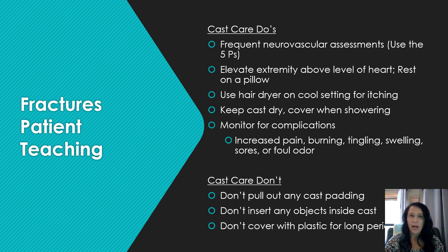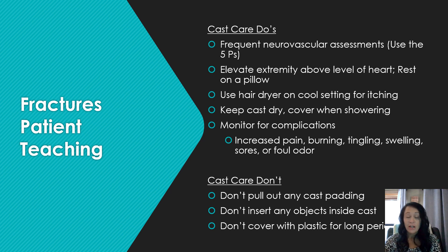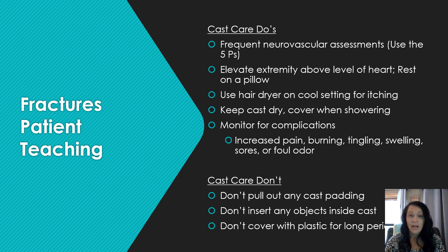Cast care dos: do frequent neurovascular assessments using the five P's; elevate the extremity above the level of the heart resting on a pillow; use a hairdryer on cool setting for any itching; keep the cast dry and cover it when showering; monitor for complications such as increased pain, burning, tingling, swelling, sores, or foul odor. Cast care don'ts: don't pull out any cast padding, don't insert objects inside the cast, don't cover with plastic for a long period, and don't try to get your extremity out.